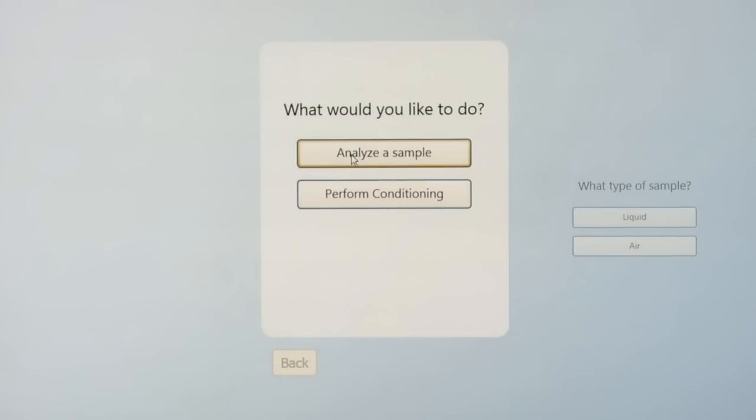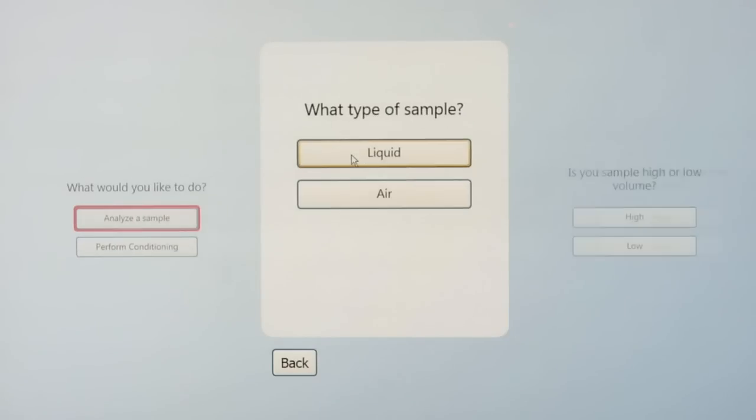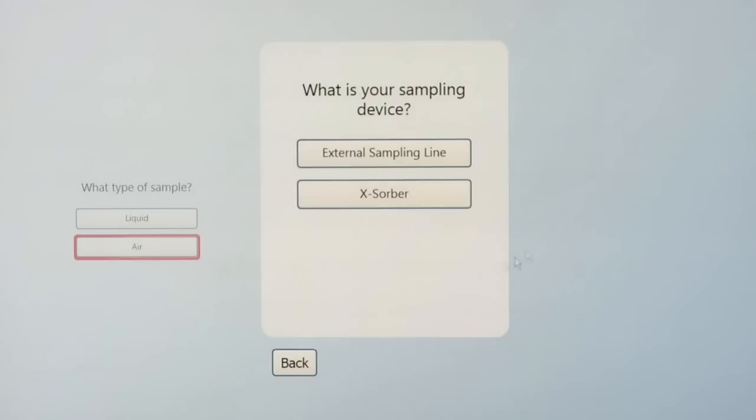Today I used the Xorber, so I'm going to select air. Next, it's asking what was my sampling device. We used the Xorber, and I'm going to select tube A because that's the tube we collected the sample on.